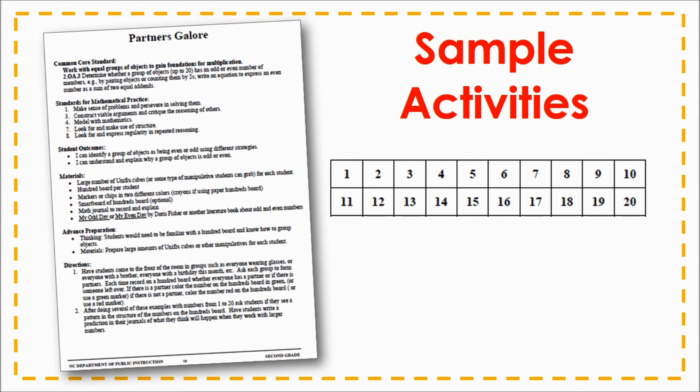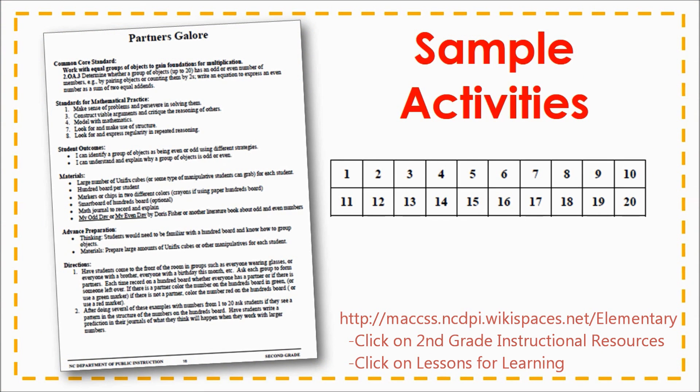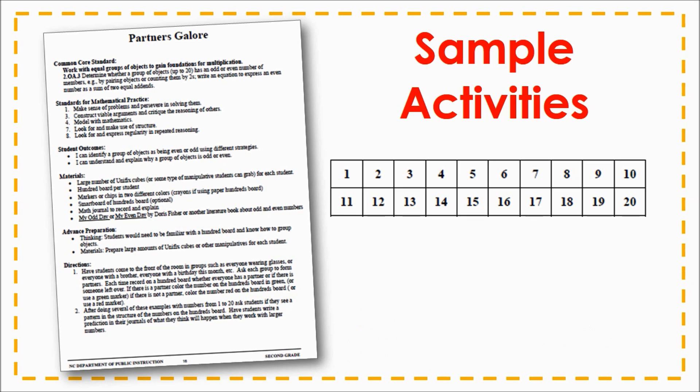Partners Galore is a whole class activity that can be used to introduce even and odd numbers. The teacher will call a group of students to the front of the classroom by a shared characteristic, such as all students who are wearing white shirts. The students in the group demonstrate making pairs to find out whether they represent an even or an odd number of students. Later, students will use counters or cubes and investigate odd and even numbers up to 20, coloring the even numbers green on the chart and the odd numbers red.